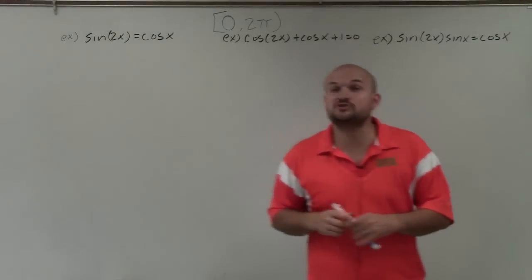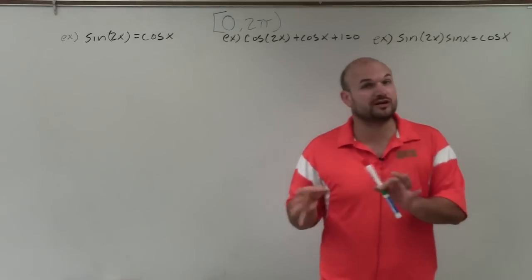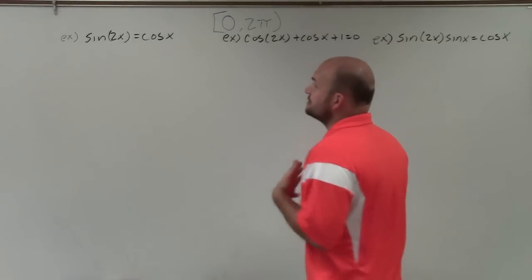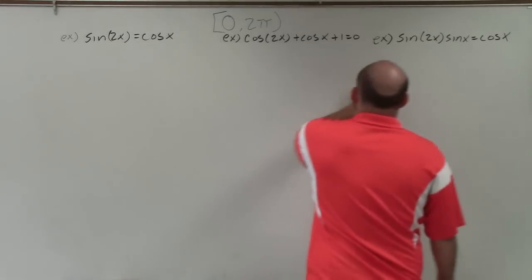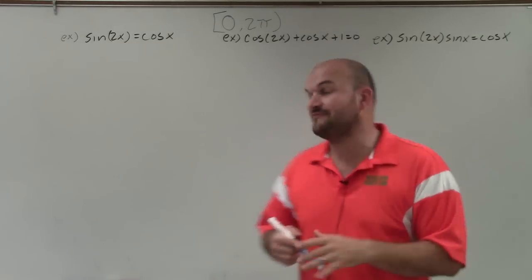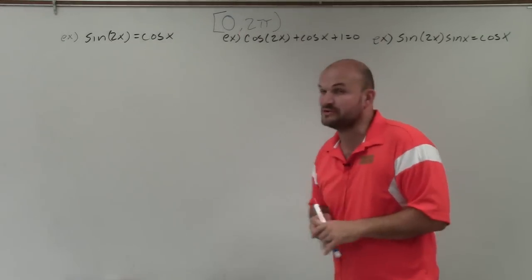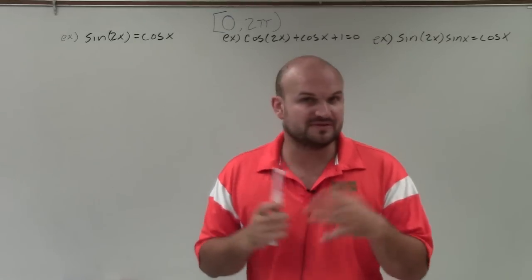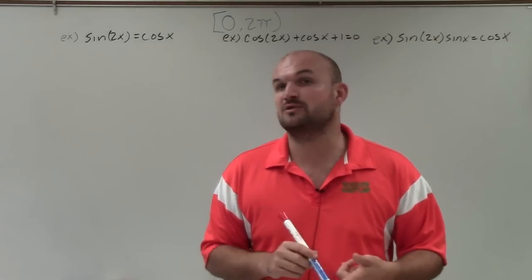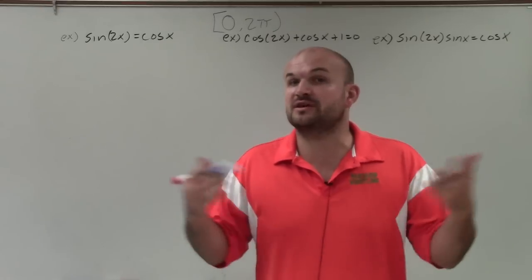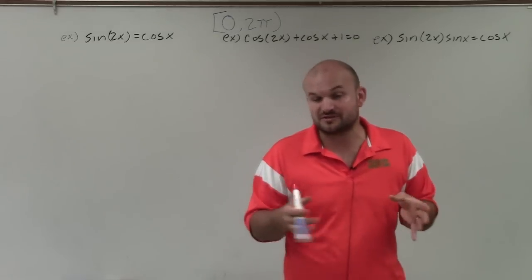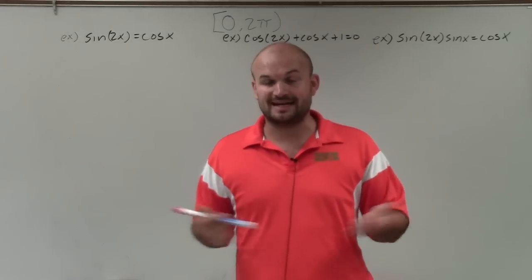Welcome, ladies and gentlemen. What I'd like to do is show you how to solve trigonometric equations involving multi-angles. In these equations, I have sine of 2x, cosine of 2x, and sine of 2x representing our multi-angles. All solutions are going to be between 0 and 2 pi. Previously, we've worked on solving trigonometric equations with one trig function using inverse operations, with multiple using factoring, then using different functions with factoring, as well as Pythagorean identities.